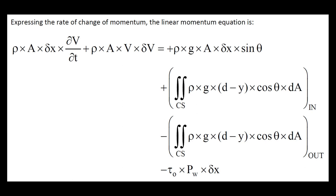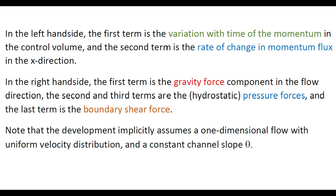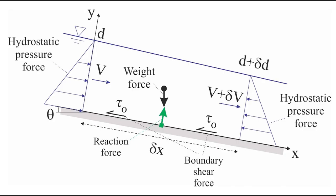Expressing the rate of change of momentum, the linear momentum equation becomes in the x-direction the following equation. On the left-hand side, the first term is the variation with time of the momentum in the control volume, and the second term is the rate of change of momentum flux in the x-direction. On the right-hand side, the first term is the gravity force component along the flow direction, the second and third terms are the hydrostatic pressure forces, and the last term is the boundary shear force. Note that the development assumes implicitly a one-dimensional flow with uniform velocity distribution on a constant channel slope.